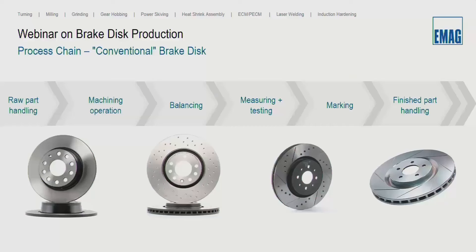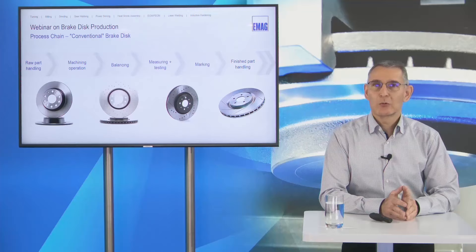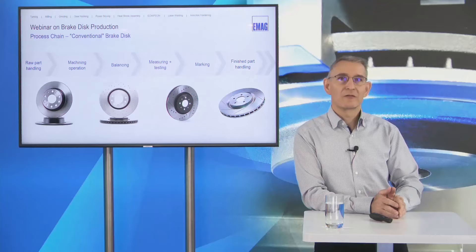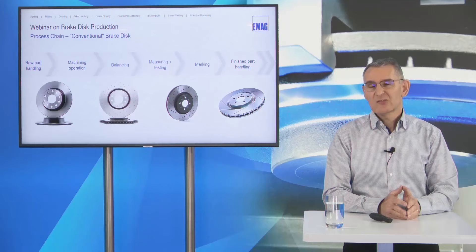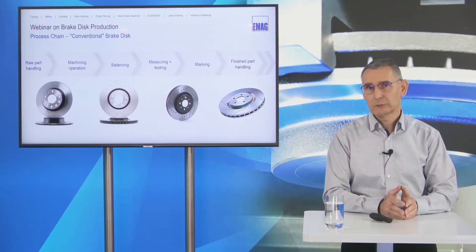Looking at the process chain of a typical brake disc production: first we have the raw part handling, where we use either an operator, a robot system, bin picking, or similar to bring the part onto the infeed conveyors. Then we have the machining operation itself — turning and drilling. Afterwards we have accompanying equipment like balancing, post-process measuring, and marking. At the end we have the finished part handling, transferring parts directly to the coating or painting area.